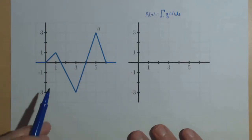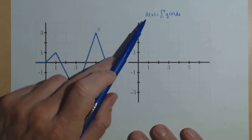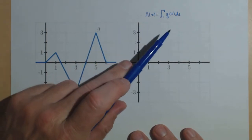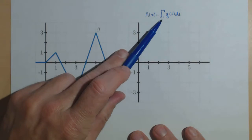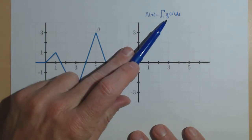In activity 5.3, we're given the graph of g, and we're asked to plot the graph of a of x, the accumulation function, that starts at 1, goes to x of g of t dt.